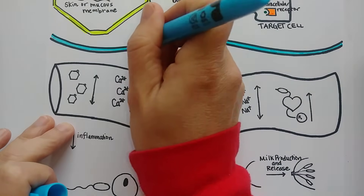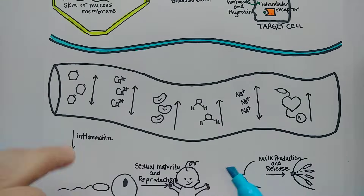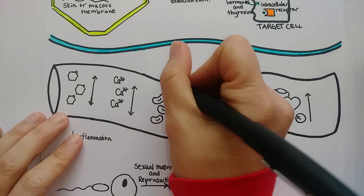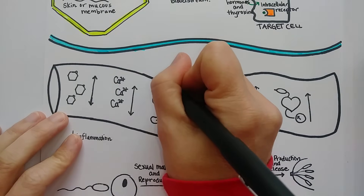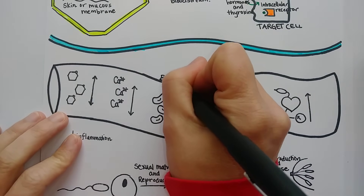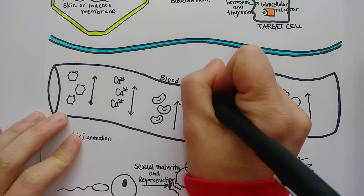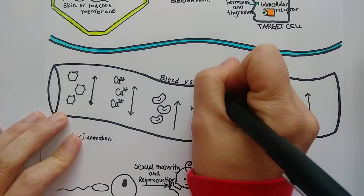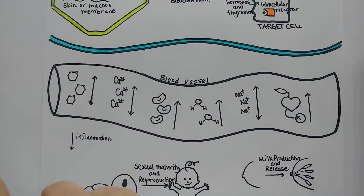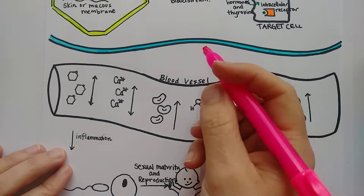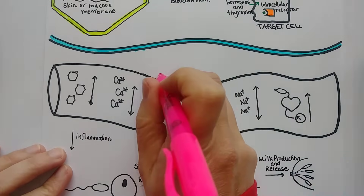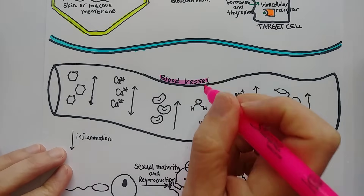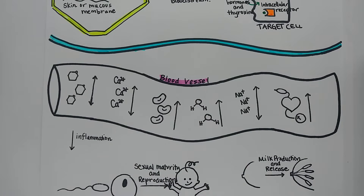Let's look at some different kinds of hormones. I've drawn a blood vessel, and I found that you can group a lot of hormones according to whether they make something become more plentiful in the blood or less plentiful in the blood.